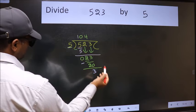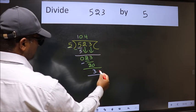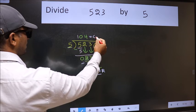No more numbers to bring down, so we stop here. This is our remainder and this is our quotient.